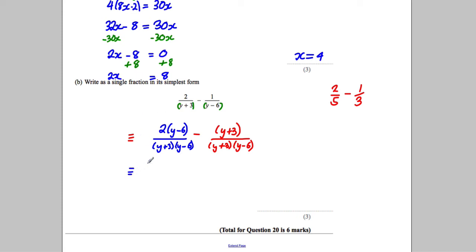So we can write this equals 2(y - 6) subtract (y + 3) all over (y + 3)(y - 6). Now let's try and expand the top. This would give me 2y - 12, so we'd have on top 2y - 12. Now we're taking away everything in this bracket.